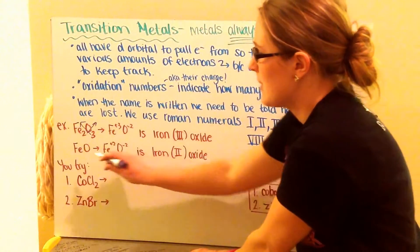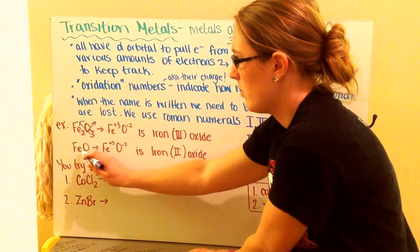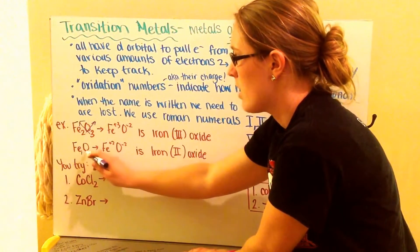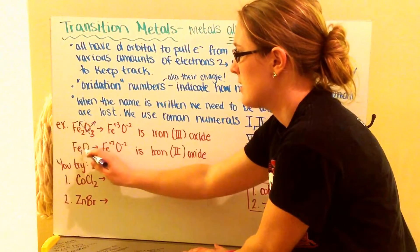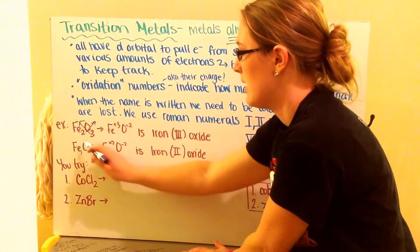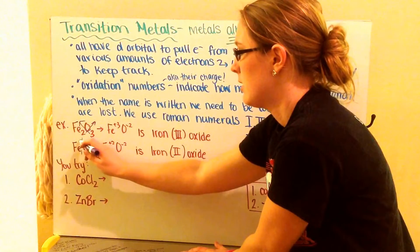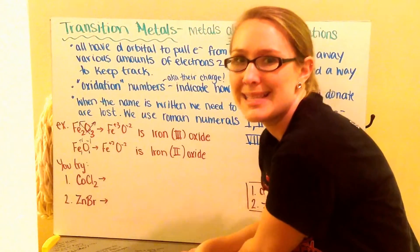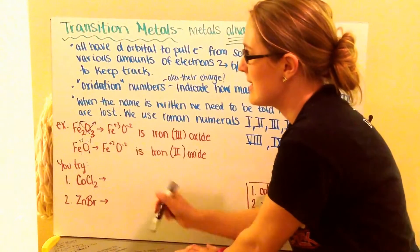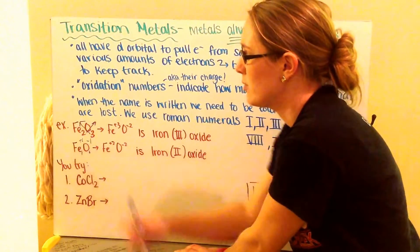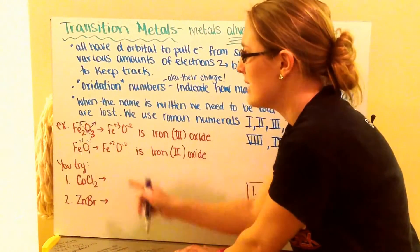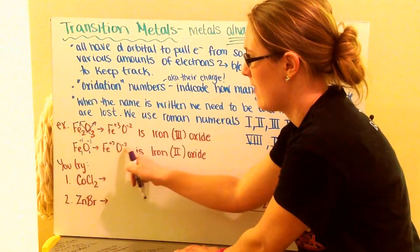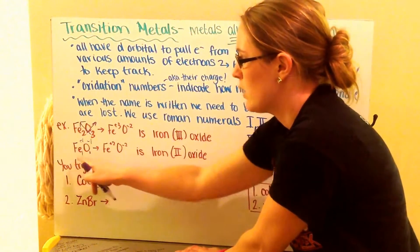So then I have my next one, FeO. Well right now they're Fe 1 O 1. And I crisscross them back up and I get iron plus 1 and oxygen minus 1. Well I know oxygen is in group 6. It has to be minus 2.